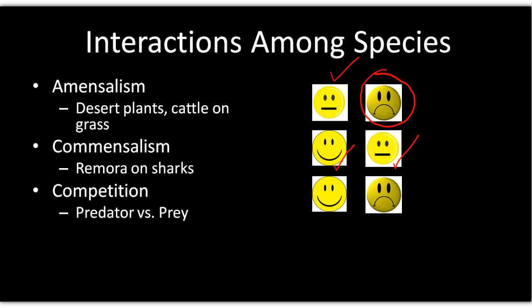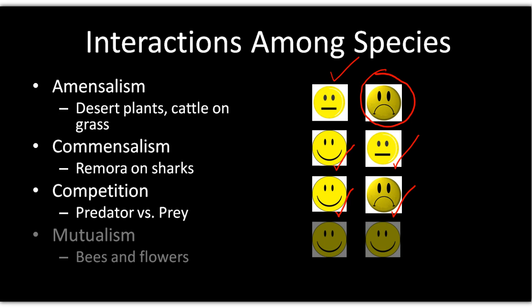In competition, one species benefits at the expense of another — for example, a lion on the savannah benefits by catching prey, while the prey does not. In parasitism, the parasite benefits by taking nutrition from a host, while the host is harmed. Finally, mutualism is a win-win — bees get nectar from flowers, and flowers get pollen dispersed to others of their kind. That wraps up the first part of this chapter sequence.